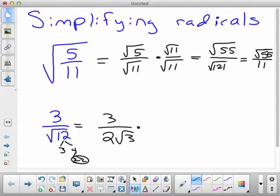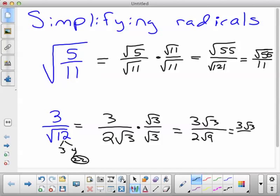Then you multiply again by a form of 1. But in this case, we just need the root 3 to go away. So we'll multiply it by root 3 on top and bottom. And so you'd have 3 root 3 on top, 2 root 9 on the bottom, which would be 3 root 3 over 2 times 3, which would be 3 root 3 over 6.